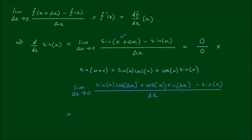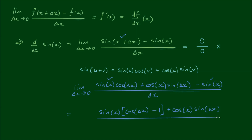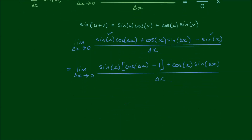Now, factoring out sine(x) between the first term and the last term, we get sine(x)·[cosine(Δx) − 1] plus cosine(x)·sine(Δx), all over Δx. We can now separate these into two limits and split the denominator.